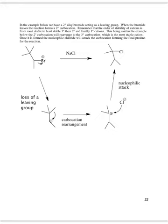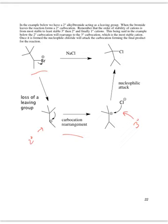If the cation formed initially is not the most stable possible, a carbocation rearrangement can occur. For example, with 2-bromo-3,4-dimethylbutane, when bromine leaves a secondary cation forms, but a methyl group can migrate over to form a more stable tertiary cation. Then chloride adds to the tertiary cation to give the product. So if the initially formed cation is not the most stable, it will rearrange before the nucleophile adds.